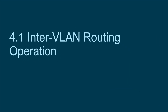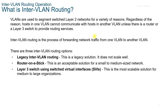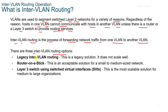4.1 Inter-VLAN Routing Operation. So what is Inter-VLAN Routing? VLANs are used to segment switched Layer 2 networks for a number of different reasons, but regardless of the reason, hosts in one VLAN cannot communicate with hosts in another VLAN unless there's a router or a Layer 3 Switch to provide routing services. Inter-VLAN Routing is the process of forwarding network traffic from one VLAN to another VLAN, and there are three Inter-VLAN Routing options.